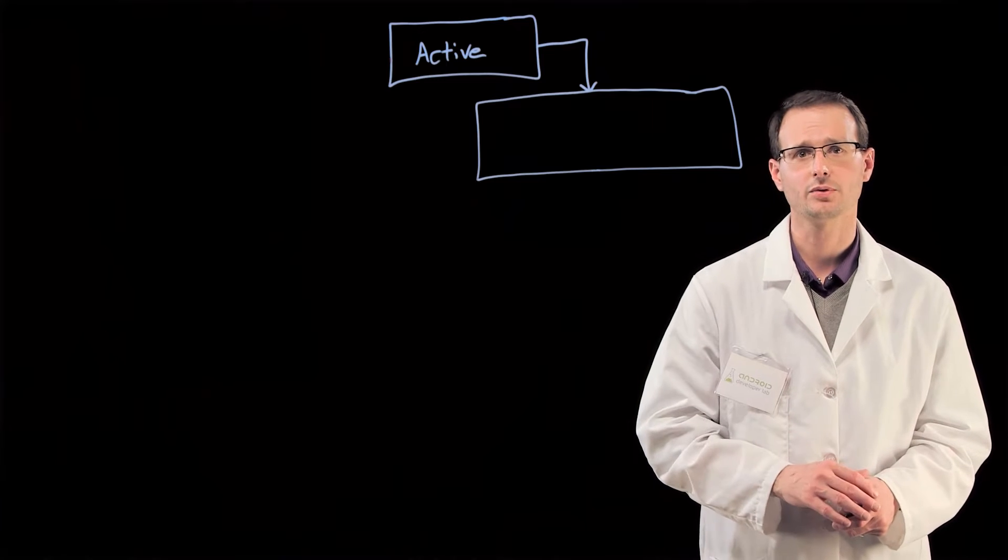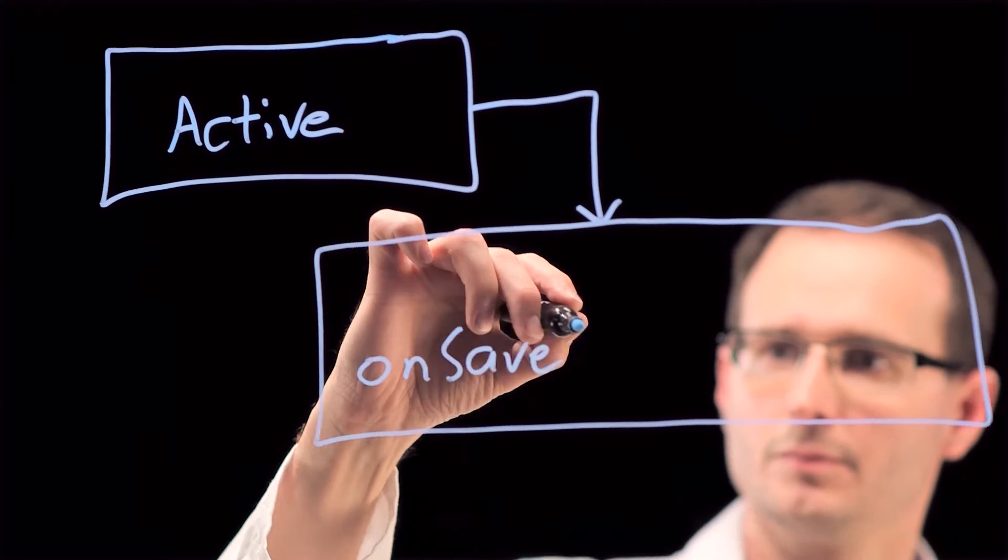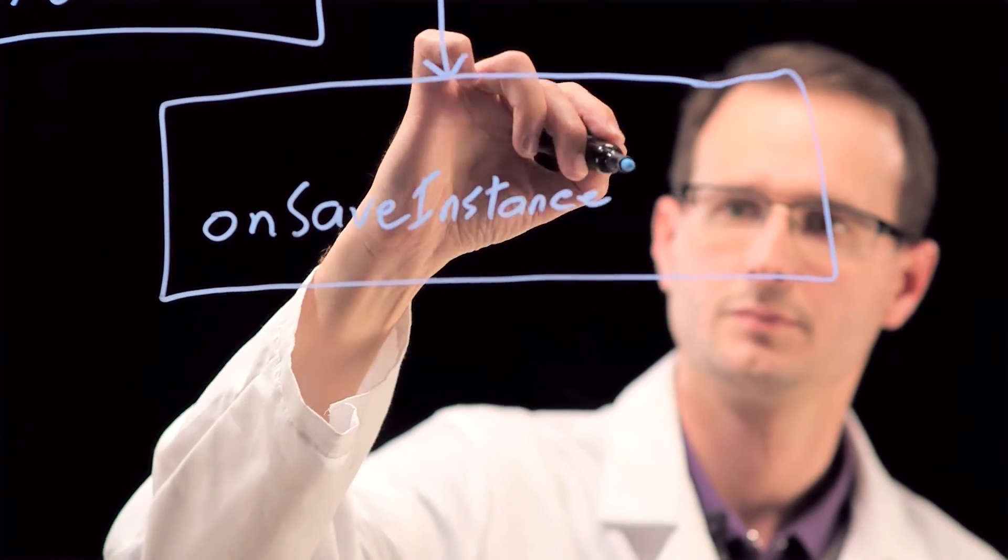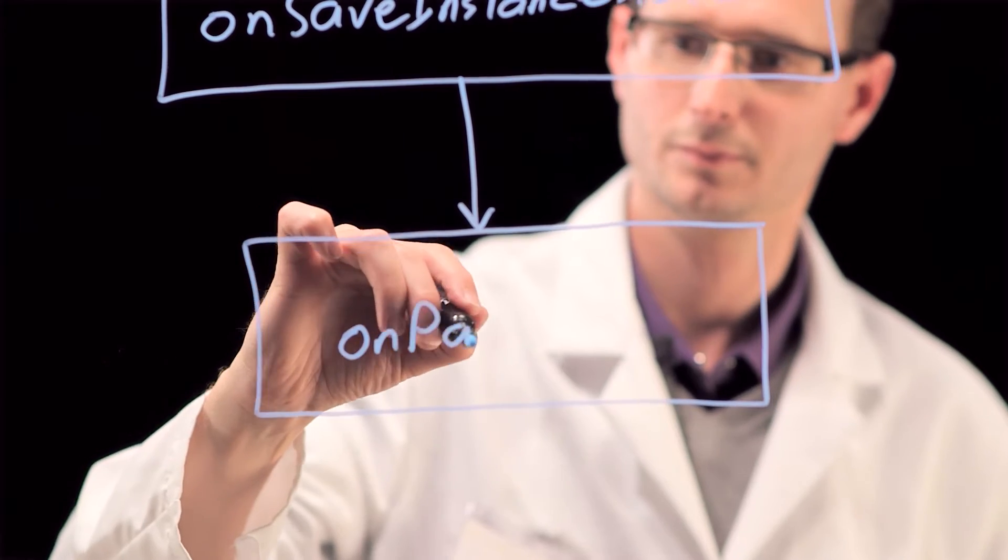So whenever the user switches back to your app, whether or not the system has killed it in the interim, they should be presented with the same UI they had when they left. To help, Android has a pair of handlers specifically for persisting state in these circumstances.